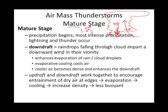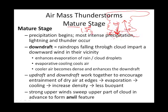In the mature stage, we have both the updraft from the cumulus stage and now also the downdraft. Notice on the slide I mentioned an anvil — this would be the anvil portion. I have a slide coming up showing the anatomy of a thunderstorm cell. The reason it has that top shape is it is topped out at the tropopause. Remember that the closest layer of Earth's atmosphere is the troposphere, topped by the tropopause, and that's kind of a stopping place for that air to ascend to.